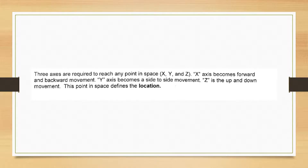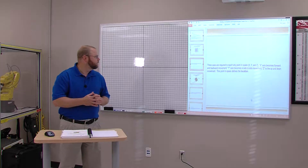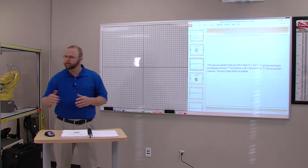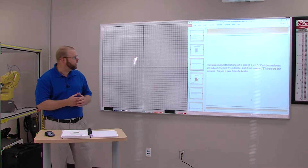Because the world's not flat, we need three dimensions. Three axes are required to reach any point in space: X, Y, and Z. The X axis becomes forwards and backwards movement, the Y axis becomes side-to-side movement, and naturally Z is up-and-down movement. So the robot moving up and down.